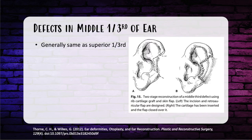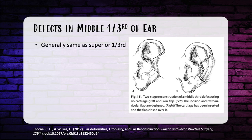For middle third ear defects, the approach is the same as for the superior third: less than 1.5 centimeters — wedge resection with primary closure; 1.5 to 2.5 centimeters — chondrocutaneous advancement flap; greater than 2.5 centimeters — posterior auricular flap. The Antia-Buch technique is technically rewarding; what seems like a challenging defect is actually straightforward with knowledge of the chondrocutaneous advancement.